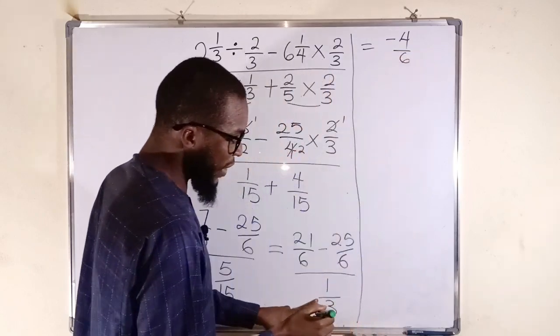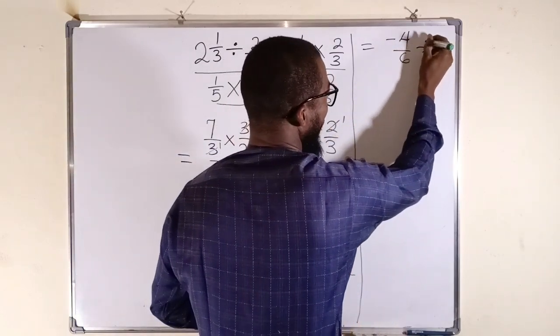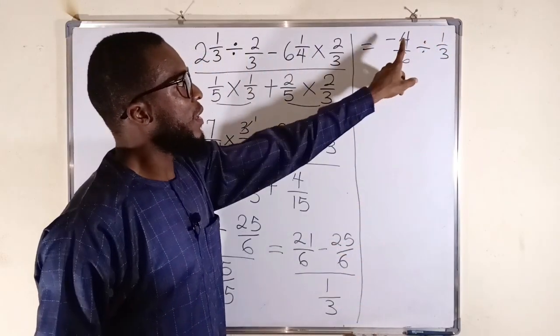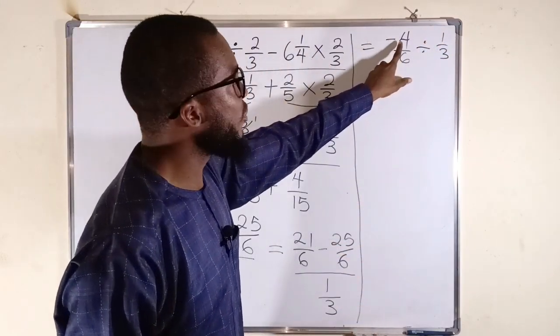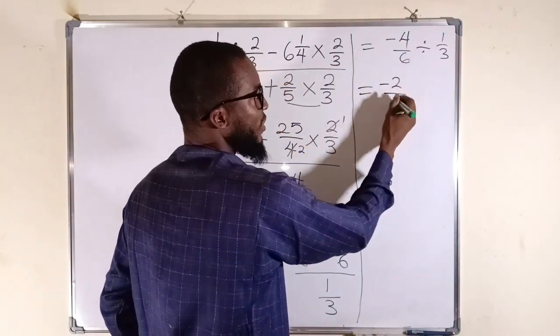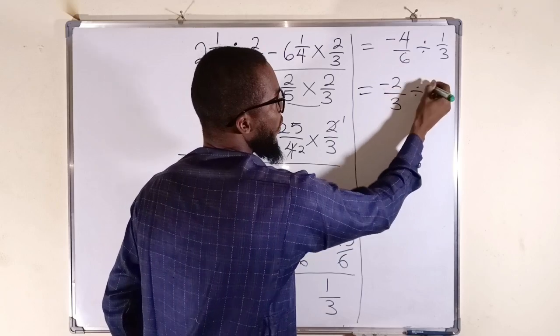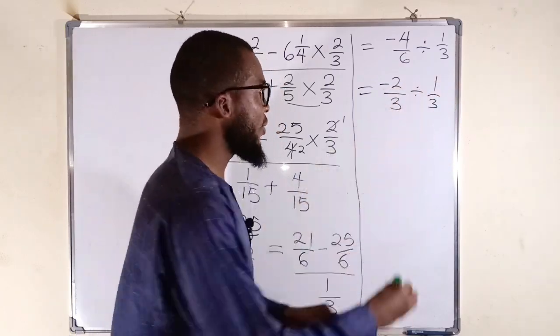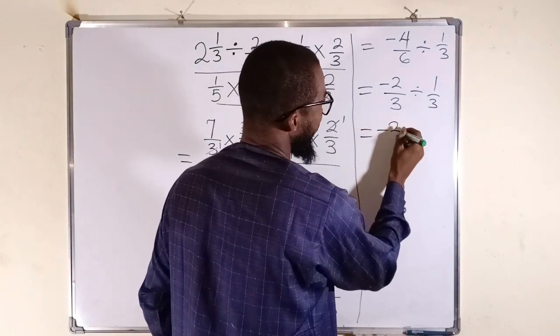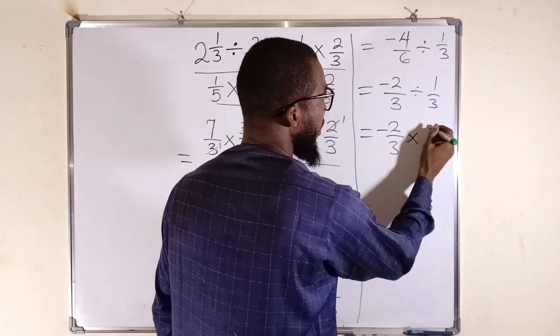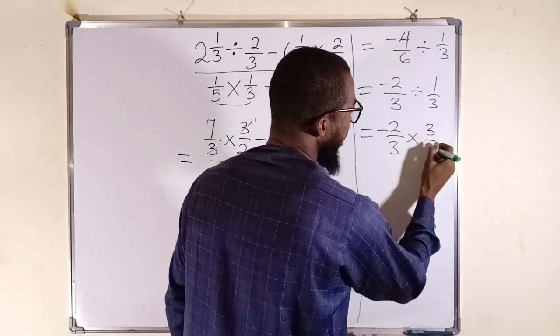Don't forget to divide. We can divide this by 1 divided by 3. This can be reduced to the lowest terms because 2 can go into 4 two times. Negative 2. 2 can go into 6 three times. Then you divide by 1 divided by 3. Change this to multiplication. So we have negative 2 divided by 3 multiplied by, then you take the reciprocal. It becomes 3 divided by 1.